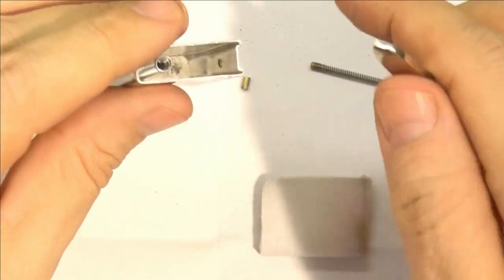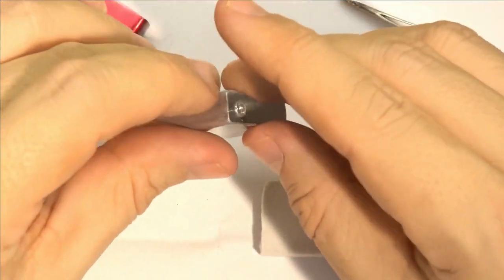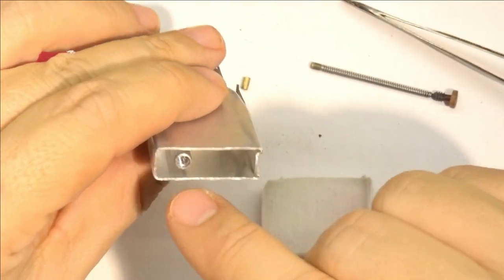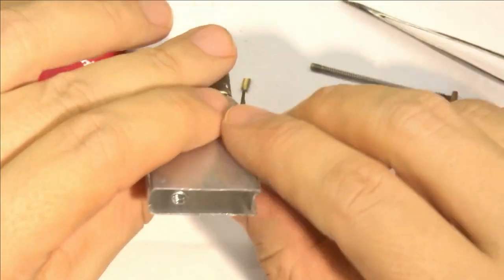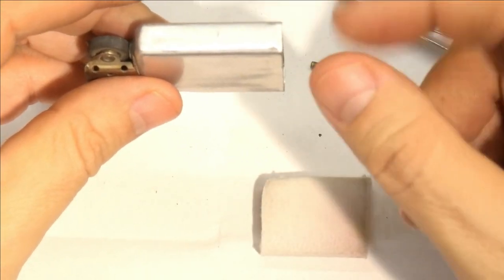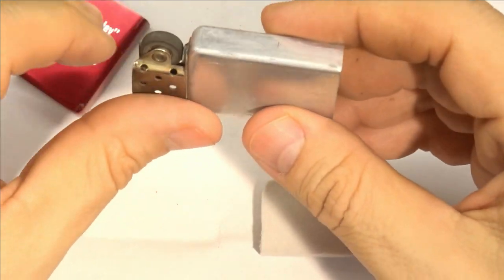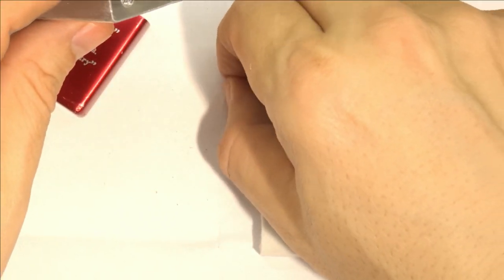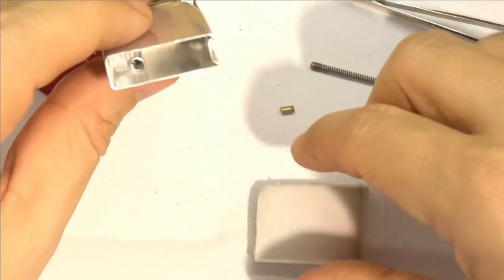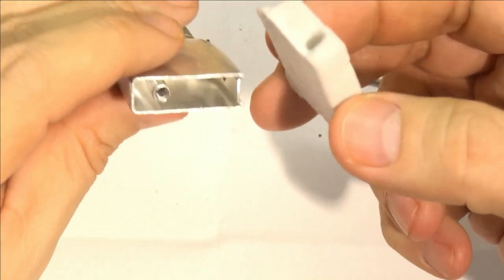When I first got it, it needed a little bit of work. It was in fairly good condition, essentially the condition that you see here. But there was a flint jammed in the flint tube, so I took an appropriate size drill and I just kind of hand twisted it until I broke through. And then I loaded in a new flint and it worked fine after that.